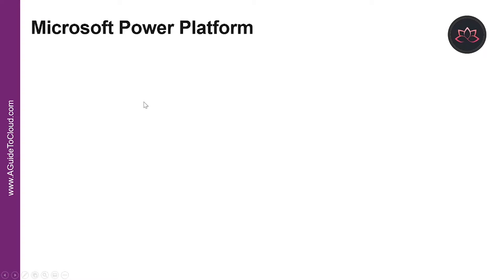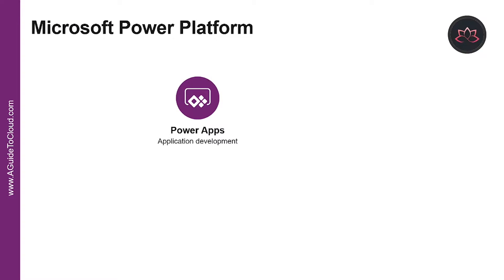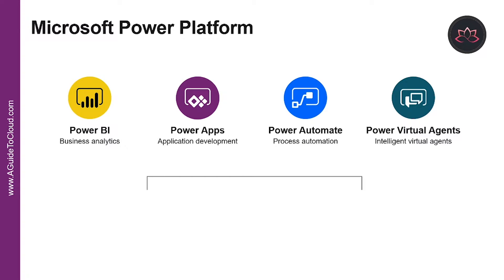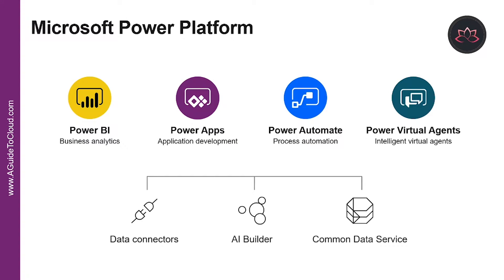Let's start with understanding what is Microsoft Power Platform. Power Platform is comprised of four key products: Power Apps, Power Automate, Power BI, and Power Virtual Agents. It also uses components like AI Builder, Common Data Services, and Data Connectors.